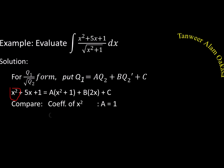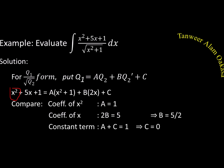Comparing the coefficient of x: on the left it is 5, on the right it is 2B, so 2B = 5 giving B = 5/2. Comparing the constant term: on the left it is 1, on the right it is A + C = 1 + C, so C = 0. We have A = 1, B = 5/2, C = 0.